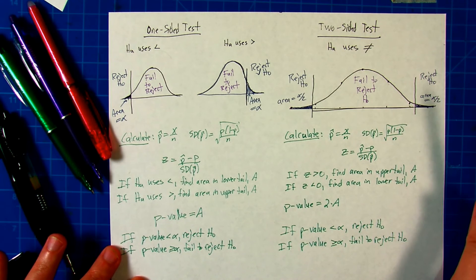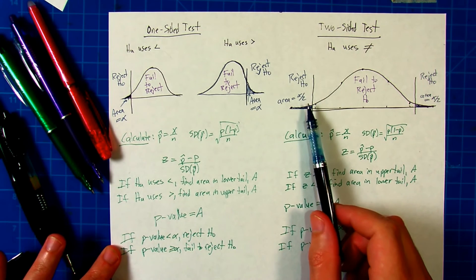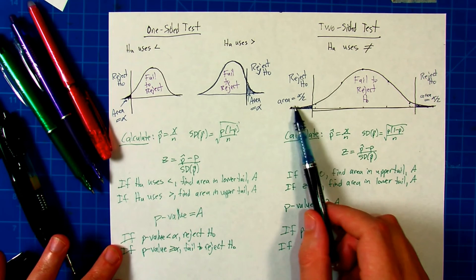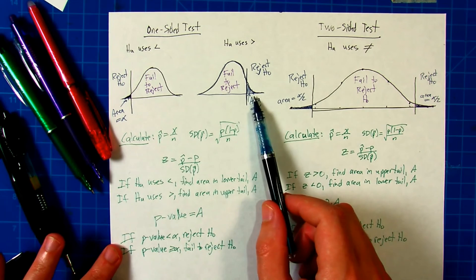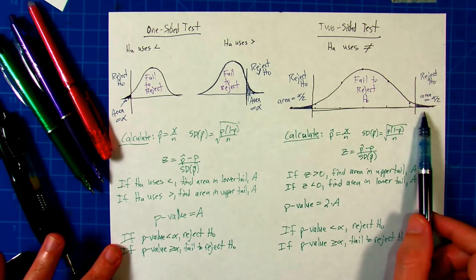Now, we've still picked a significance level, alpha, but since it's a two-sided test, we have to use area alpha over two for each one of these. Here, we put all the area alpha in either the lower or upper tail, but here we split it up amongst the two tails.